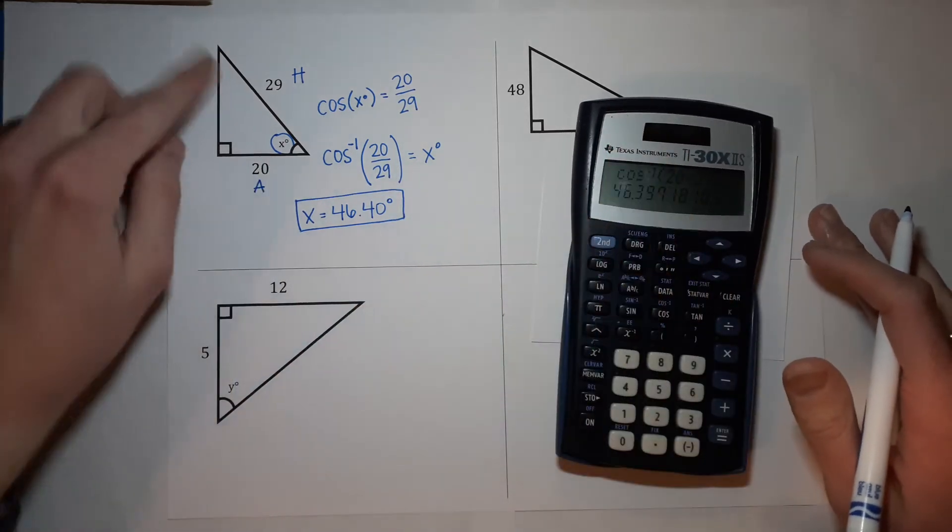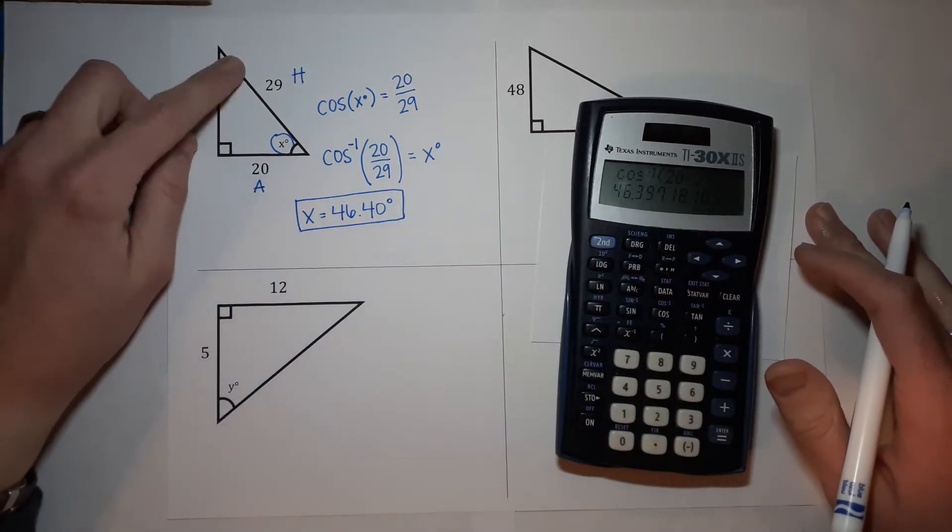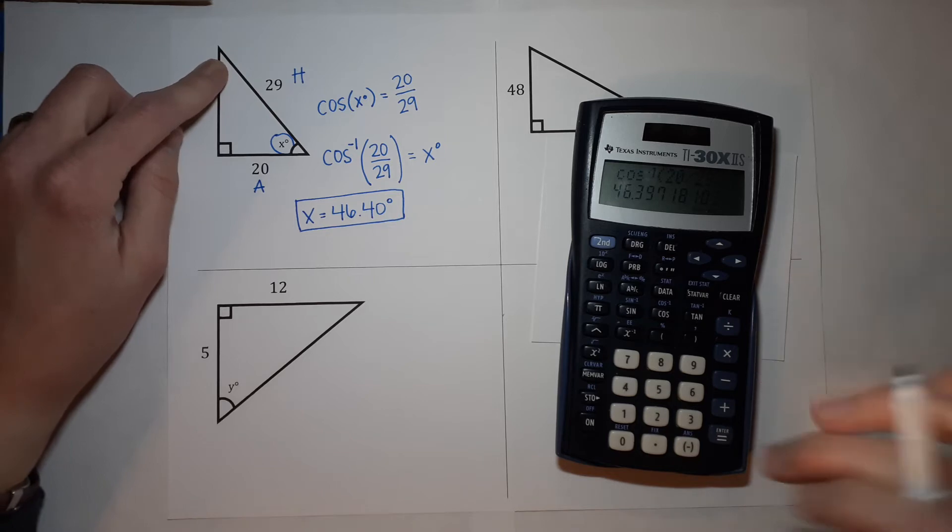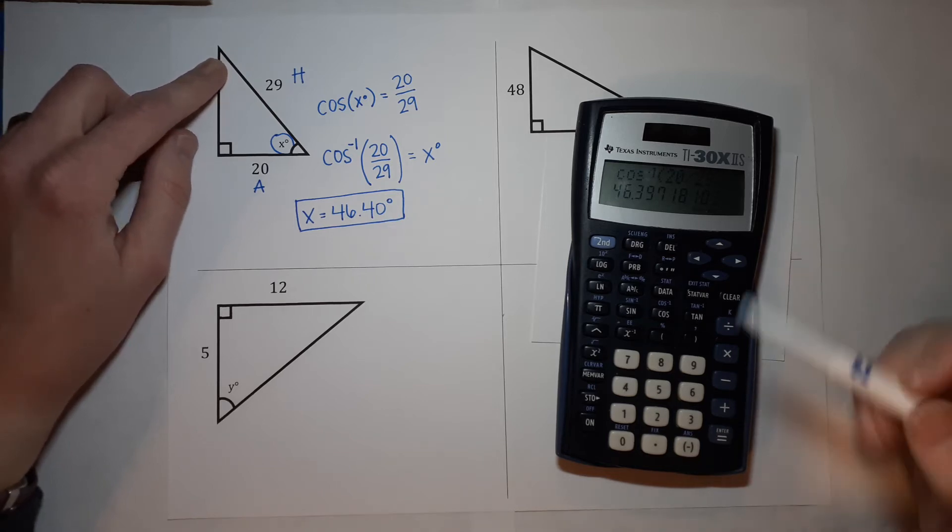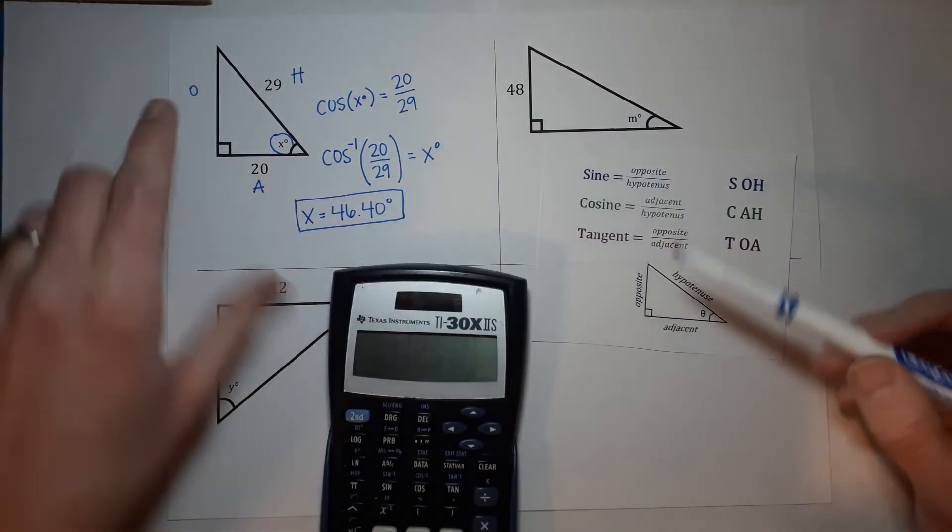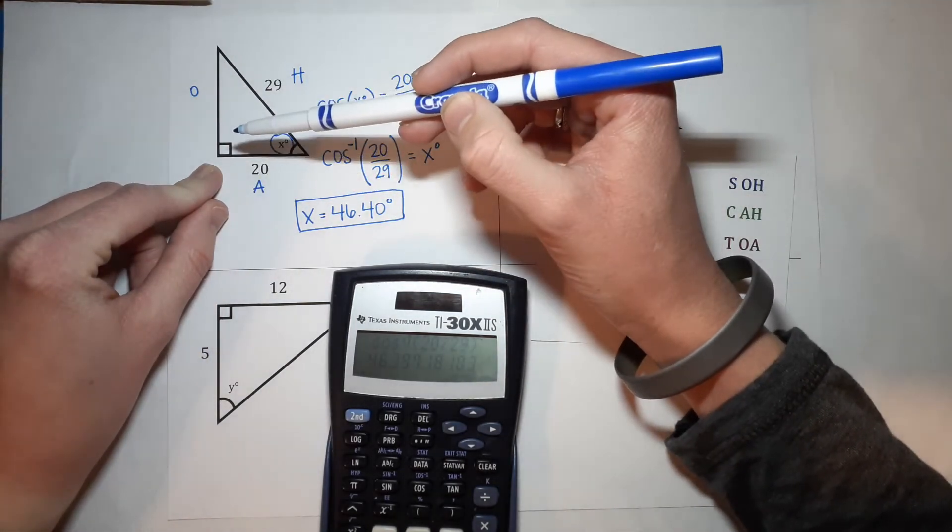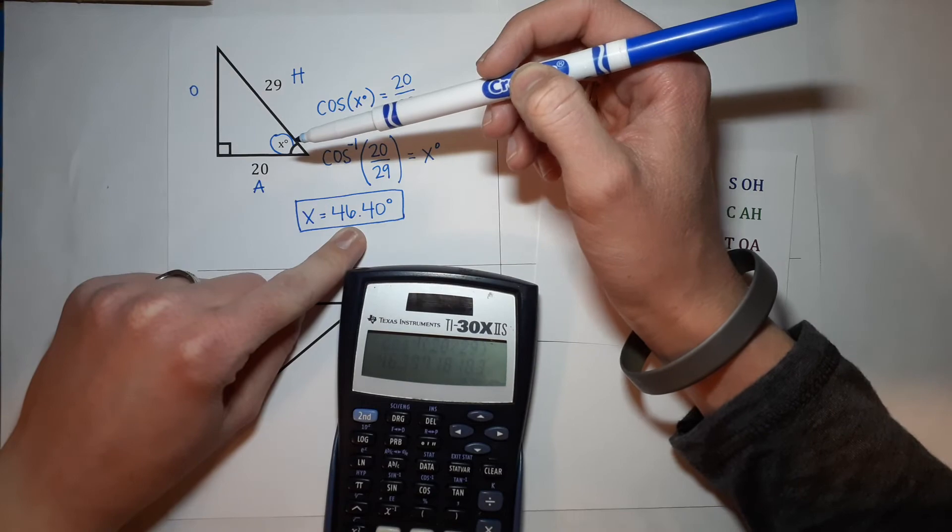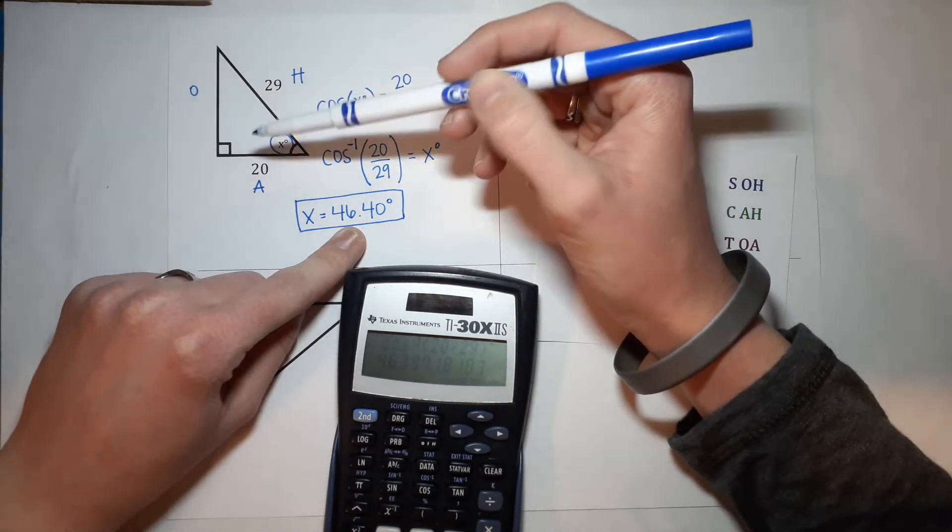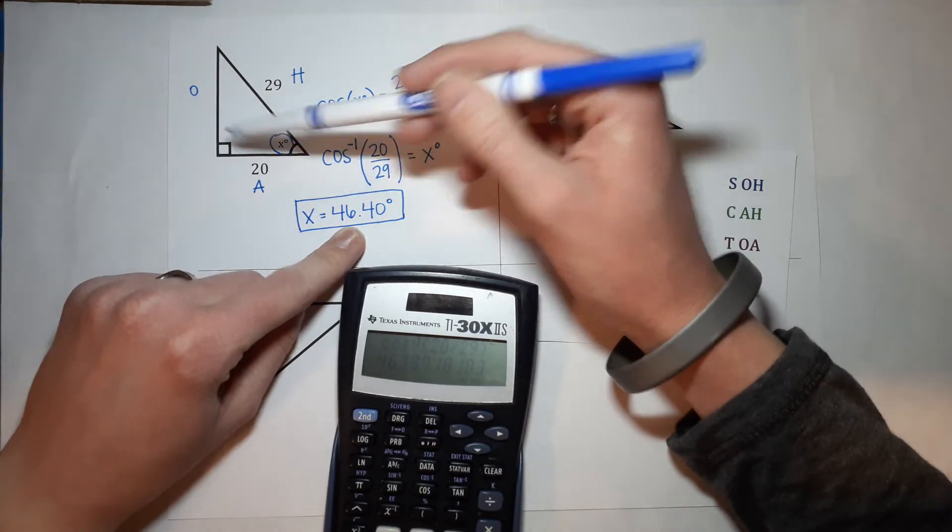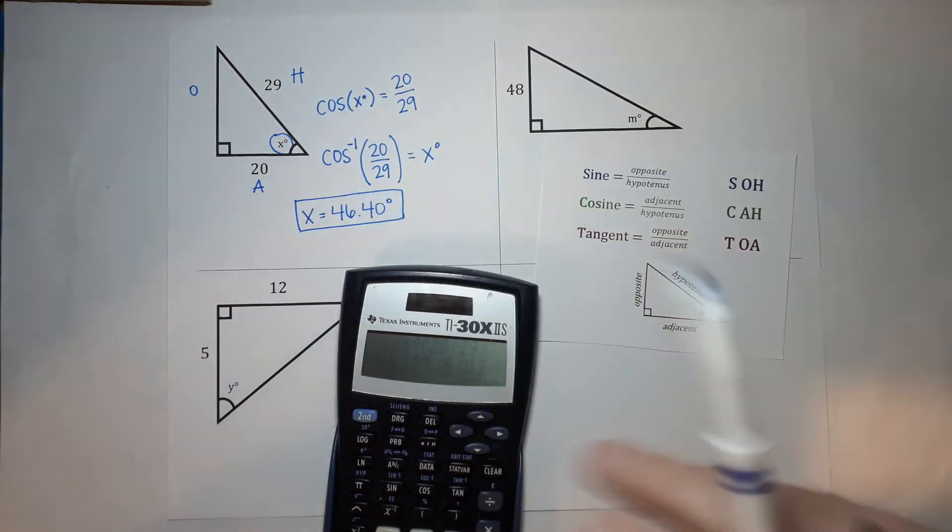Now if they wanted you to find the other angle, you could do an inverse one of these again, or we always know that the three angles add to 180, and we have 90 and we have this one, so we could find that one just by subtracting these two from 180.